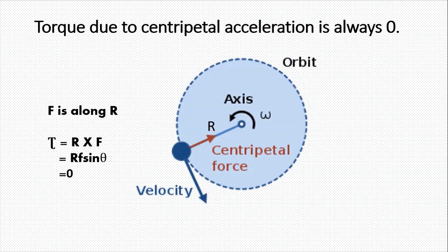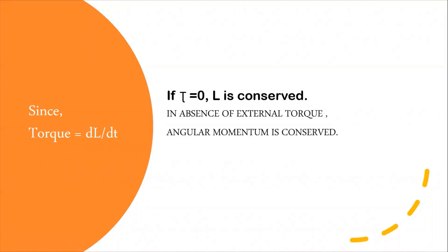Due to centripetal acceleration, torque is always zero. Centripetal force is directed toward the center, meaning it acts along the radius. Since torque equals r cross F, and r and F are along the same line, sin(theta) = 0, so torque is zero. Since torque equals dL/dt and torque is zero, angular momentum must be conserved — L is constant. In the absence of external torque, angular momentum must be conserved.